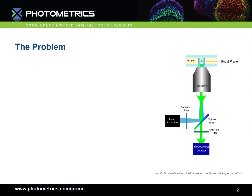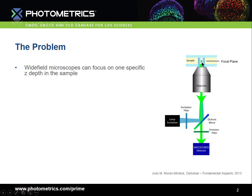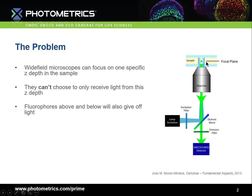To begin with, we'll start by looking at the problem with conventional wide-field fluorescence microscopy. Here we have a schematic of a wide-field system, and here we have a sample. We can choose to focus on a certain focal plane within the sample for the features that we want to observe. But what we can't do with a wide-field microscope is choose to only receive light from this focal plane. Fluorophores from above and below our chosen focal plane will also be illuminated and also give off light, which will reach our detector.